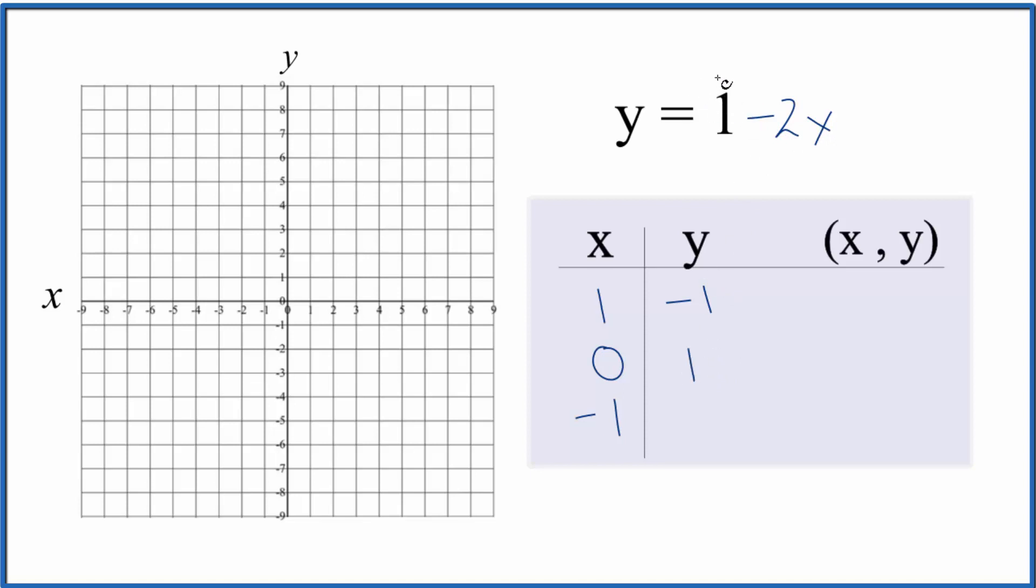And if we put a negative 1 in for x, negative 2 times negative 1, that's just 2. So 1 plus 2 is 3. So these are the points we'll graph for the equation y equals 1 minus 2x, which originally was 2x plus y equals 1. Same thing.